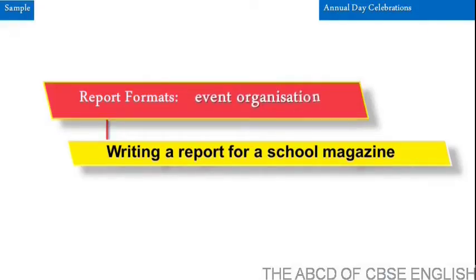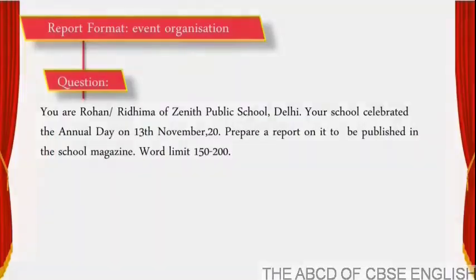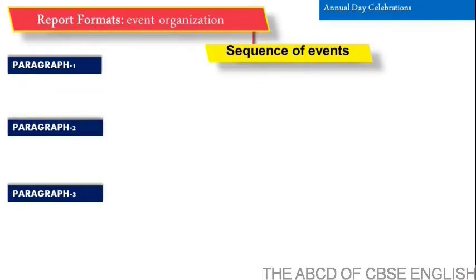Let us look at a sample CBSE question for a report writing on an event organization for a school magazine. The question reads: You are Rohan Redema of Zenith Public School, Delhi. Your school celebrated the annual day on the 13th of November 2020. Prepare a report on it to be published in the school magazine. The word limit is 150 to 200 words. Before we write, let us imagine the sequence of events of an annual function day and look at them paragraph-wise to understand the paragraph organization of report writing.